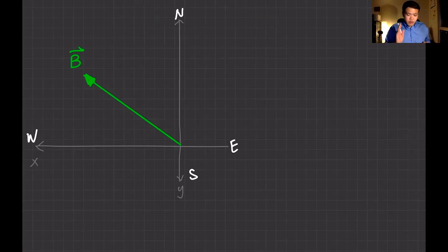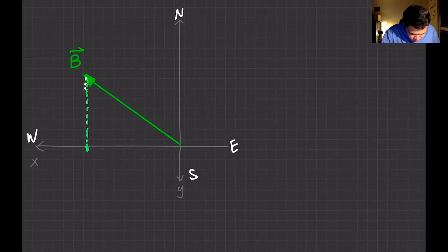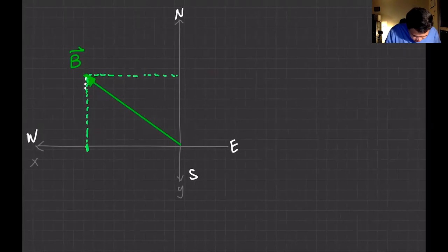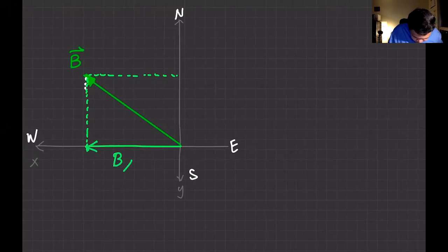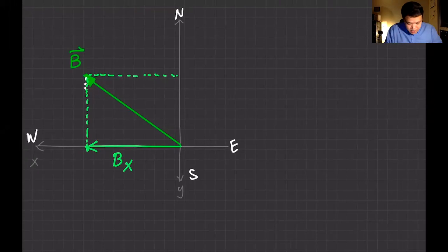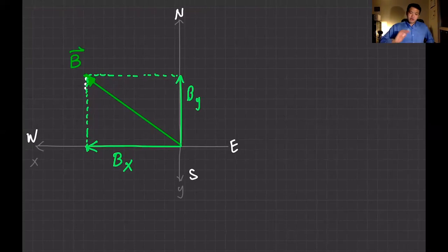Let's analyze the x and y components of vector B. I'll draw the projections — Bx is like a shadow of vector B along the x-axis, and By is the projection along the y-axis.